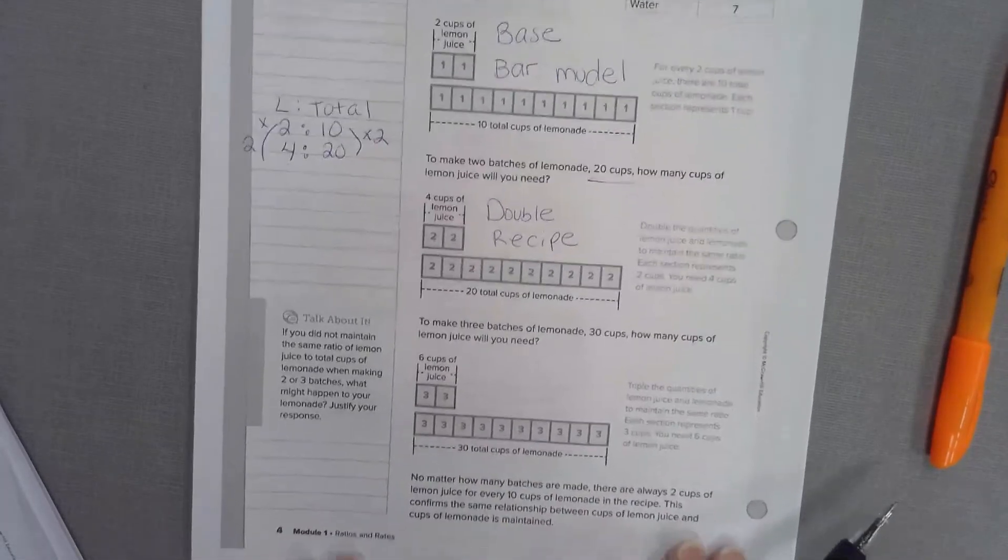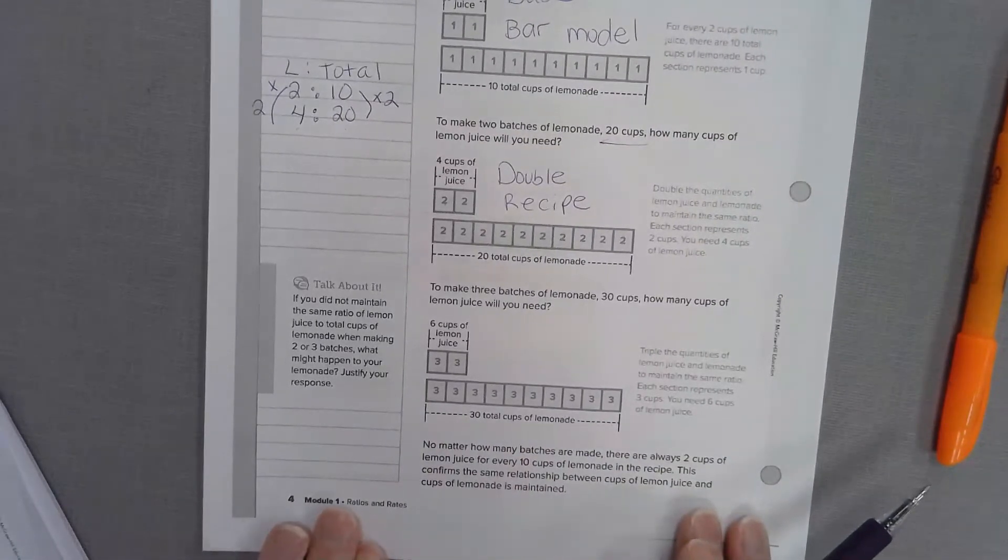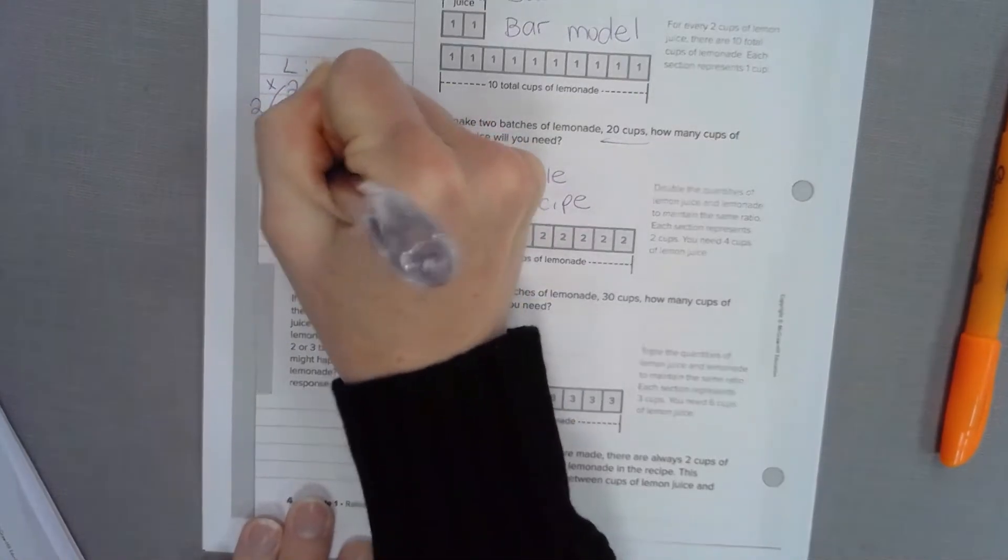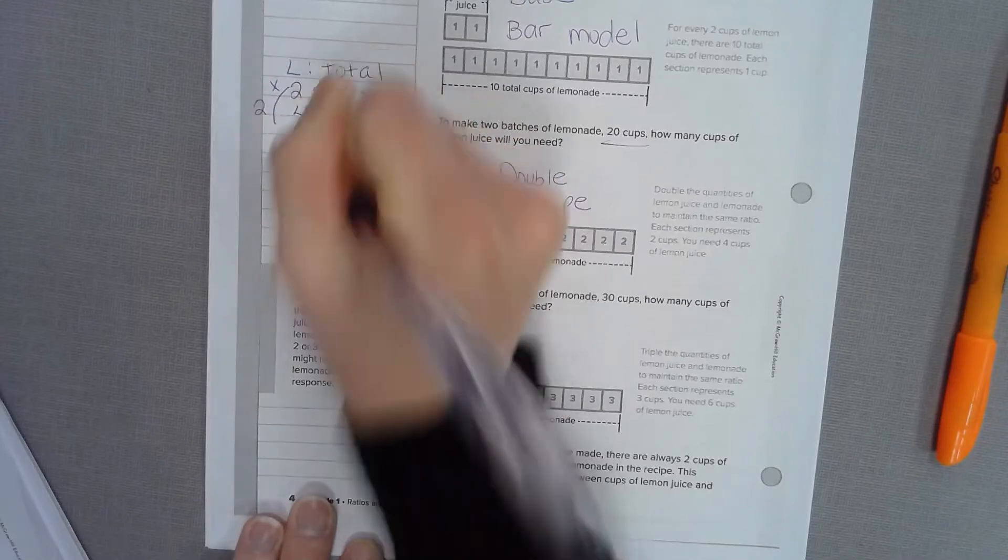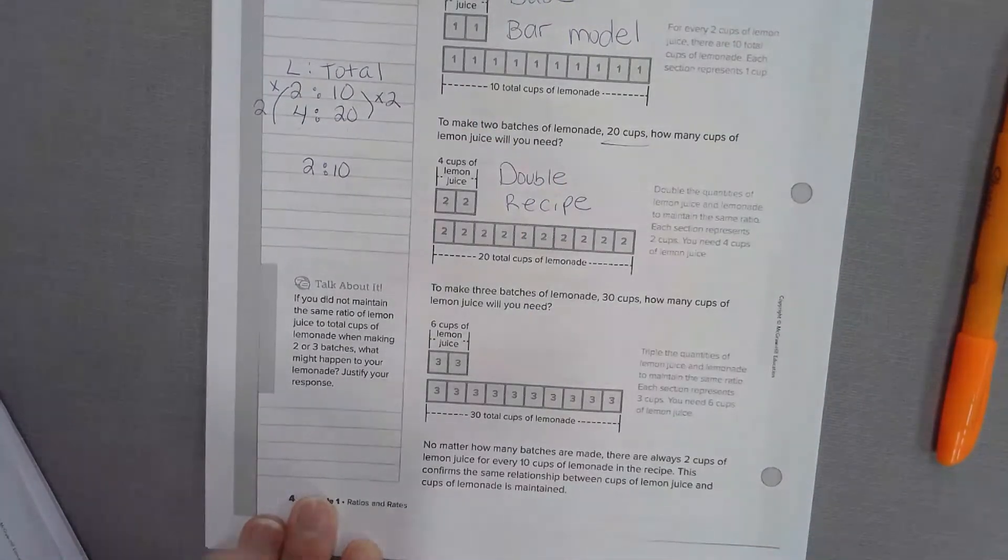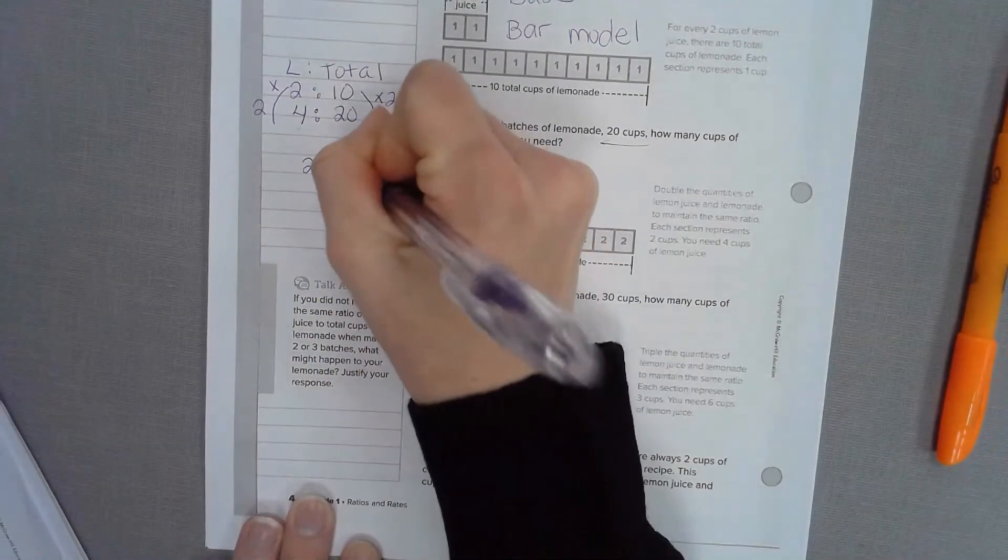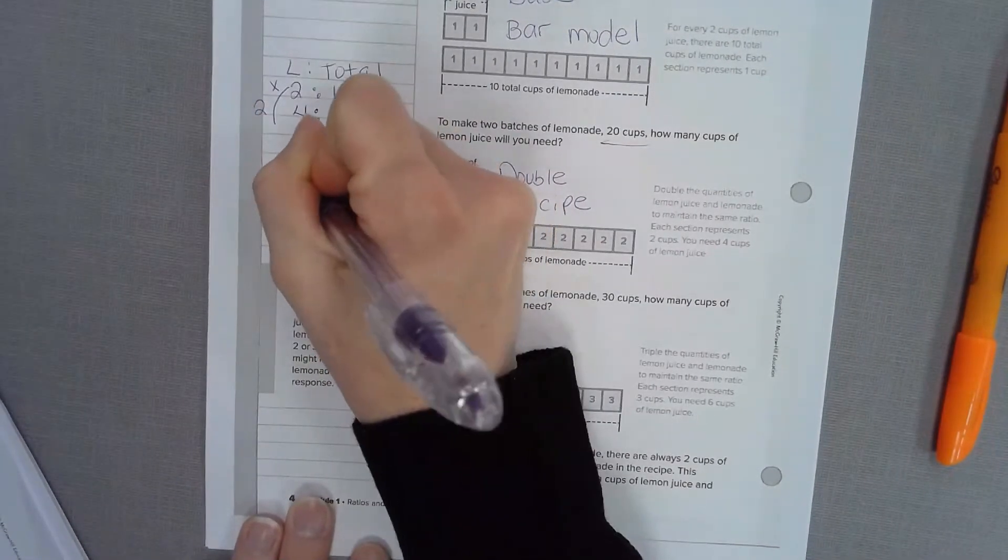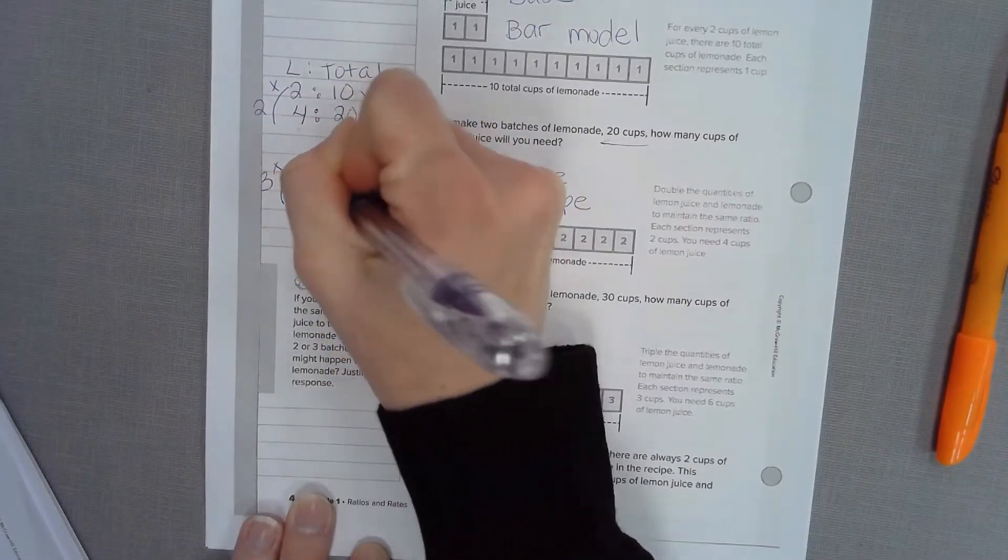What happens if we want to make 3 batches of lemonade? Let's write our base ratio, 2 to 10. And let's times it by 3. So we will have 6 cups of lemon juice to 30 total cups.